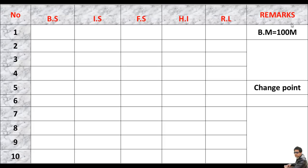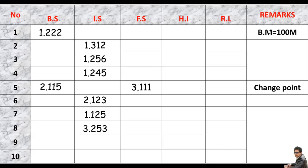The table also has the RL column and remarks for details. I have readings for backside, inter side, and fore sides, and we need the RL of all points from 1 to 10. The RL of point 1 must be known — here it's given as 100 meters, which is the benchmark. The benchmark is always taken at a known point with a known elevation.